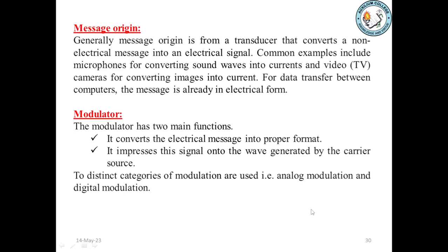The message origin is generally from a transducer that converts a non-electrical message into an electrical signal. Common examples include microphones for converting sound waves into currents and video cameras for converting images into current. For data transfer between computers, the message is already in electrical form. The modulator has two main functions: it converts the electrical message into proper format, and it impresses the signal onto a wave generated by the carrier source. Two distinct categories of modulation are used — analog and digital modulation.